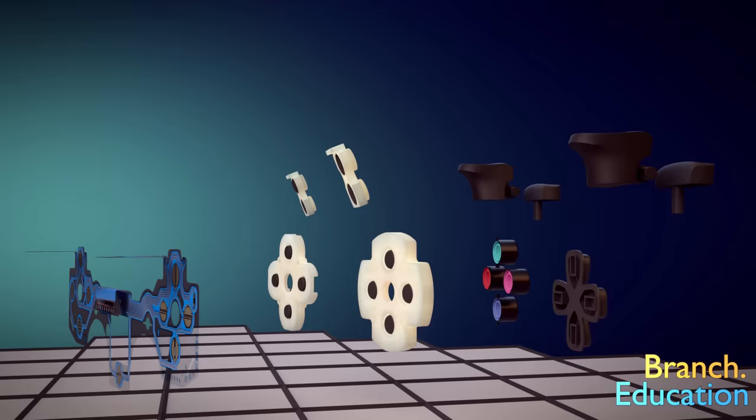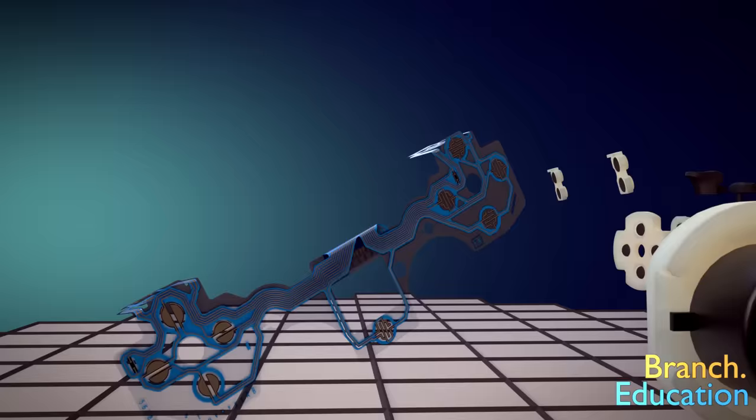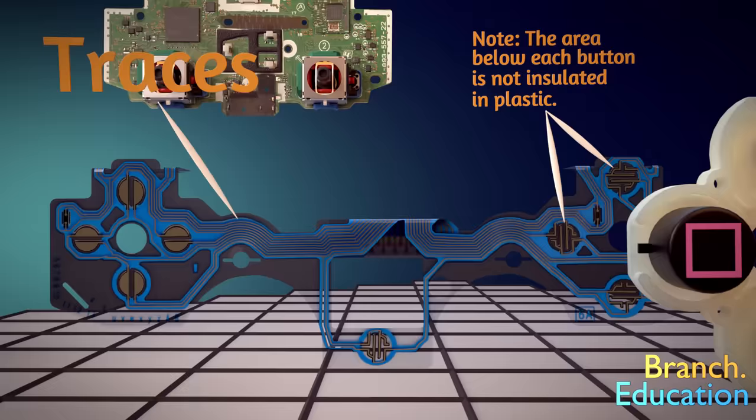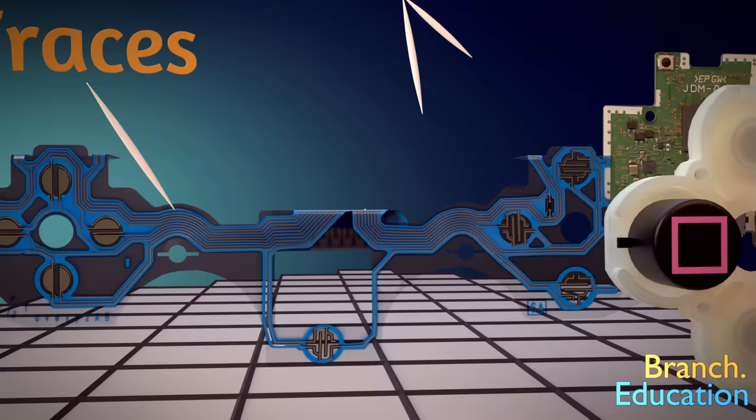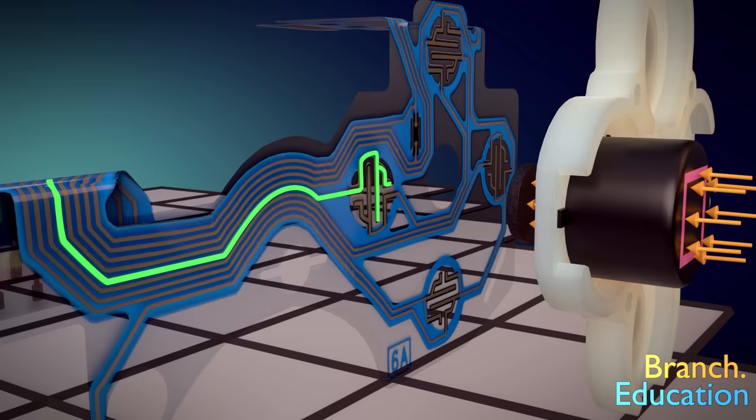For each button on the PlayStation 4 controller, there are three parts: the plastic front face, the rubber button gasket with a conductive bottom, and the flexible plastic contact board. On the contact board are a set of intricate wires or traces protected by insulating plastic, similar to the wires that run through the printed circuit board. Below each button is a gap in the wire that breaks the path of electricity.